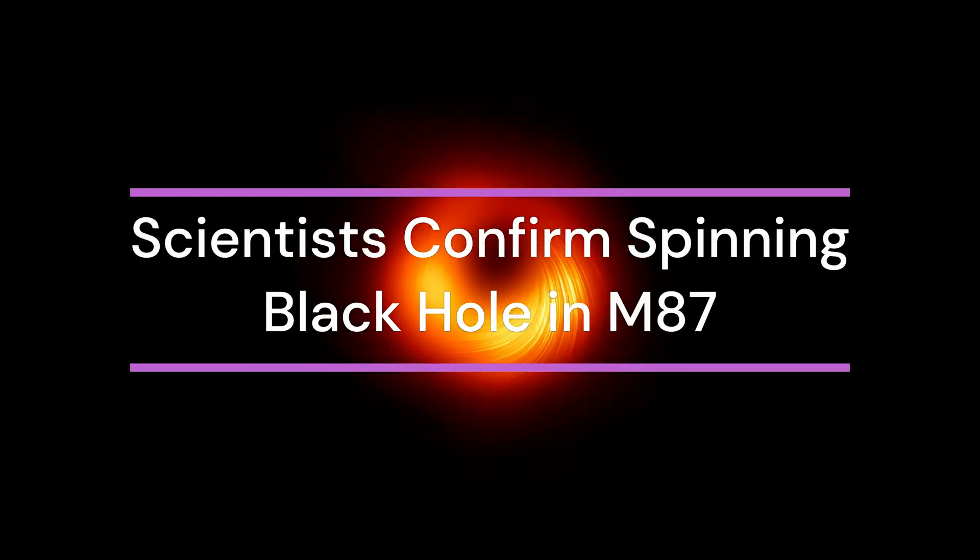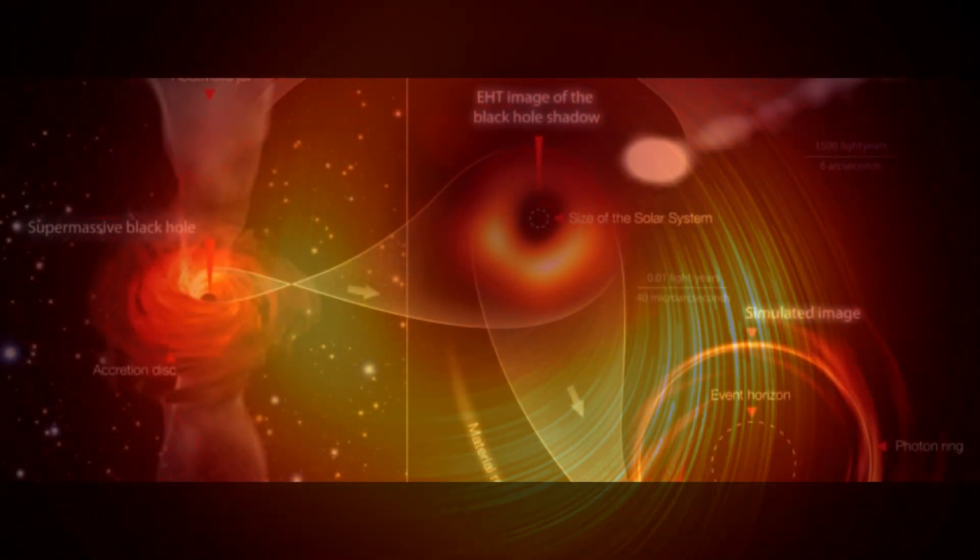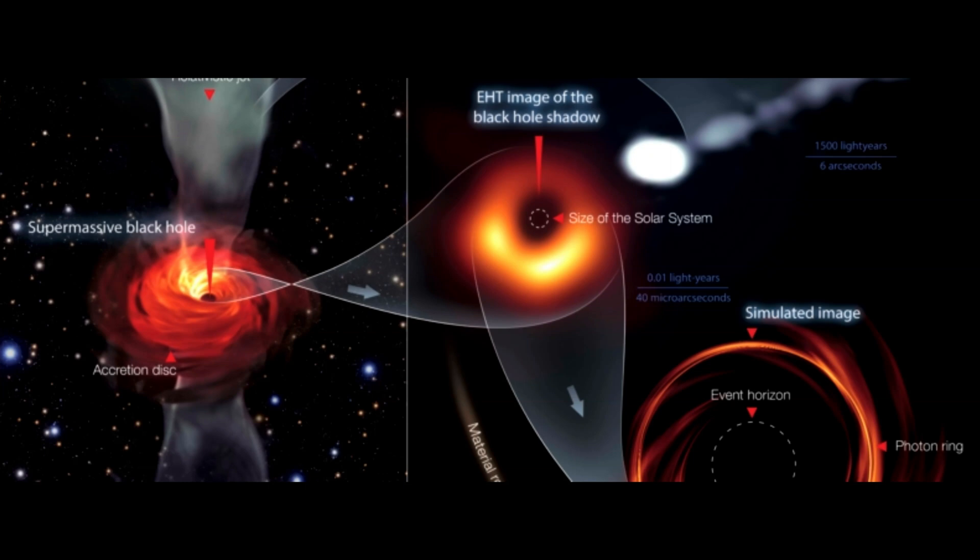Astronomers have recently made a groundbreaking discovery regarding the black hole known as M87. They have observed two massive jets emanating from this monster black hole, and these jets exhibit a wobbling or precession on an 11-year cycle.